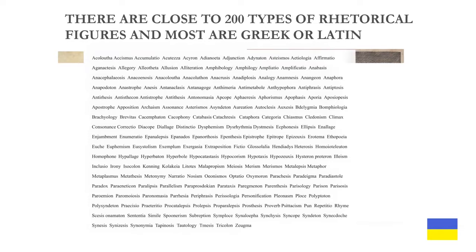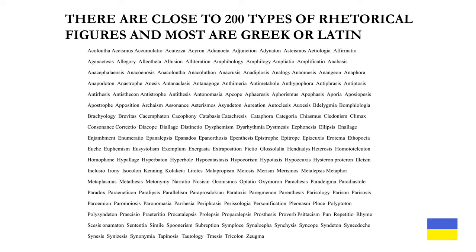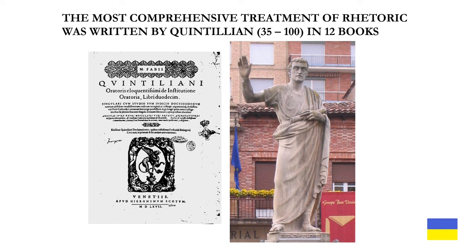There are close to 200 types of rhetorical figures, and most are Greek or Latin. The most comprehensive treatment of rhetoric was written by Quintilian, who lived from 35 to 100 AD, in 12 books. On the left we see the title page of a 1567 edition published in Venice.